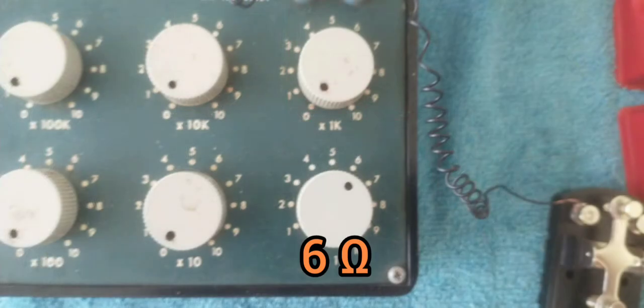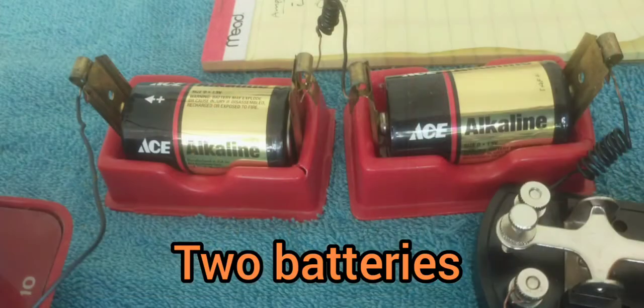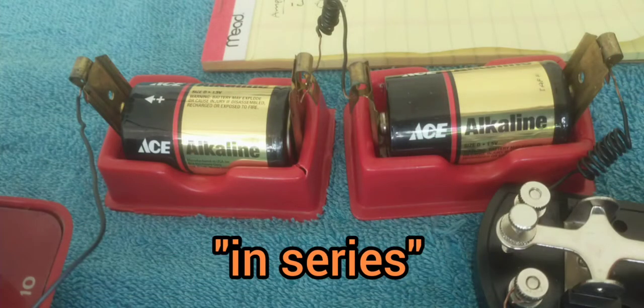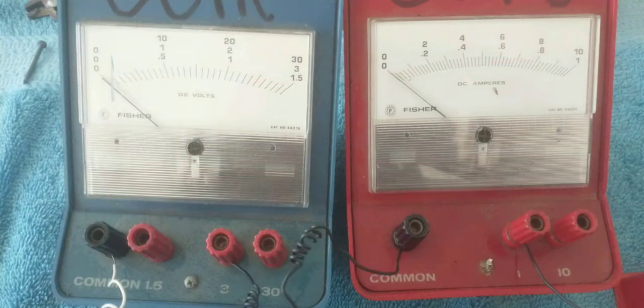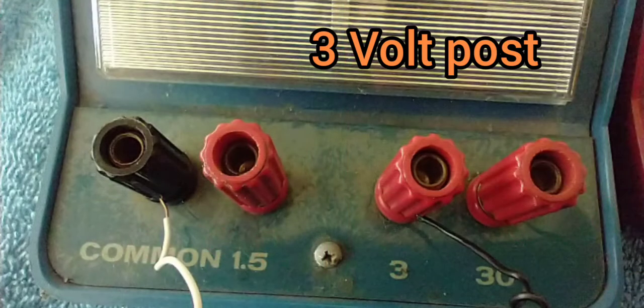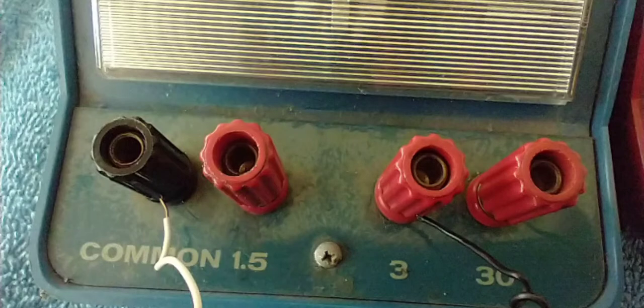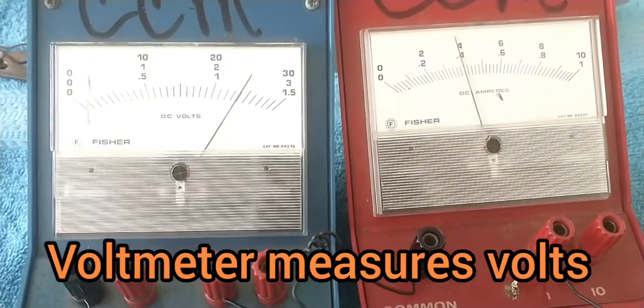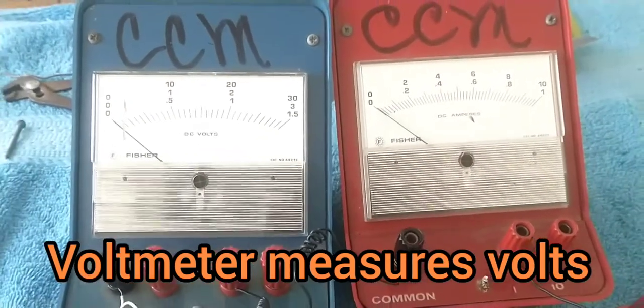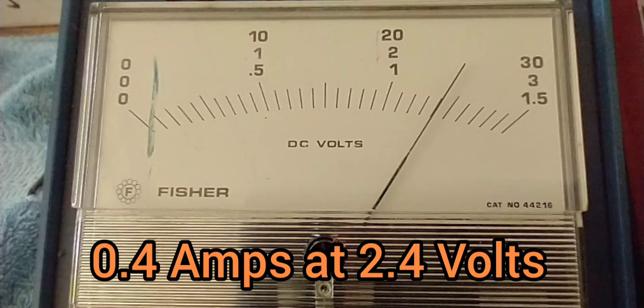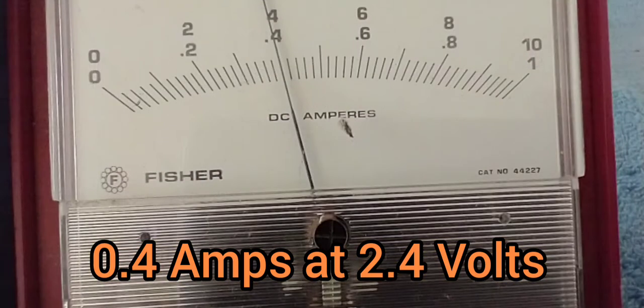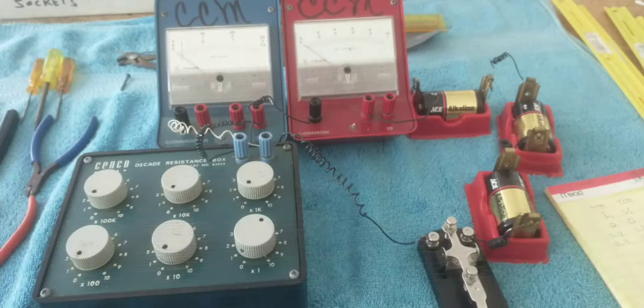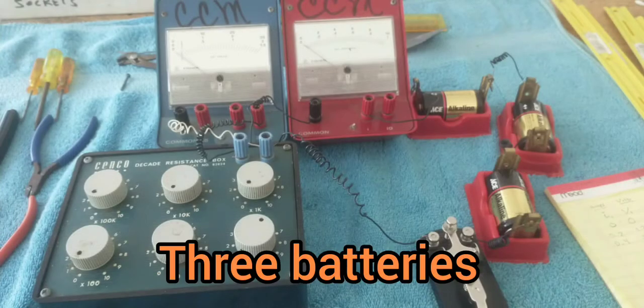I'm at 6 ohms, but now I've got two batteries attached to the circuit in series. So their voltage will add up. And with two batteries, I've now had to switch to the 3-volt post, which will be the middle scale on the voltmeter. I'm still in the 1-amp post on the ammeter on the right. And I've got about 0.4 amps at about 2.4 volts.